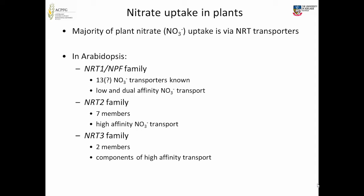The NRT2 family are high affinity transporters with seven known members. The NRT3s are not transporters at all — they don't have the classic 12 membrane domain structure — but they're important because the NRT2s don't transport nitrate unless they're in a complex with the NRT3s. There are two members in Arabidopsis.